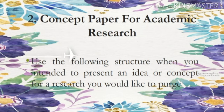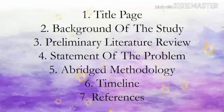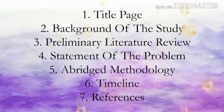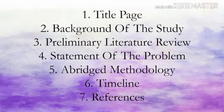The second one is the concept paper for academic research. Its structure includes: first, title page; second, background of the study; third, preliminary literature review; fourth, statement of the problem or objectives; fifth, brief methodology; sixth, timeline; and lastly, references.